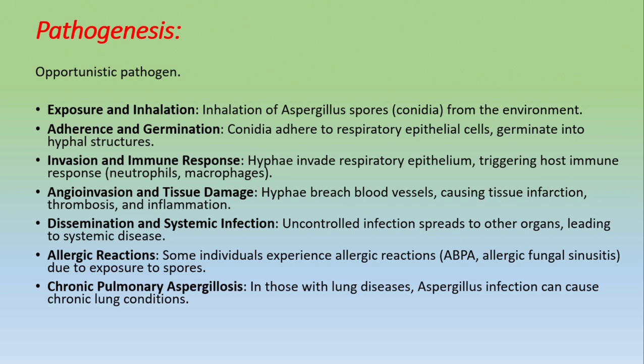To summarize aspergillus pathogenesis: spores are inhaled, adhere to respiratory epithelium, germinate into hyphal structures (which facilitate tissue invasion), invade the epithelium, trigger immune response with neutrophils and macrophages, cause inflammation and tissue damage, breach blood vessels causing tissue infarction and thrombosis, and then disseminate through the blood to various organs. Different disease manifestations result: invasive disease, allergic reactions, and chronic pulmonary aspergillosis.